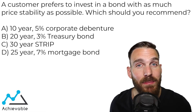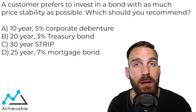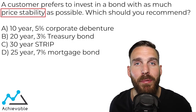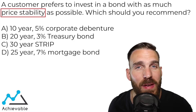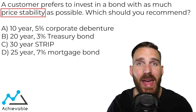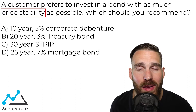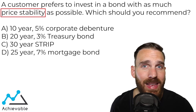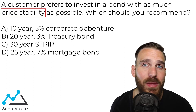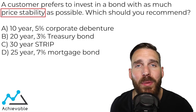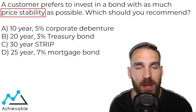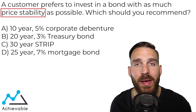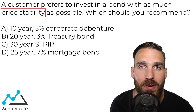This one's not exactly easy, but let's see how confident you are in your answer. We have a customer that's looking for as much stability in price as possible — meaning we don't want to see big swings in market value. If a bond is worth $1,000 today, we want it to still be close to $1,000 tomorrow, no matter what happens in the market. We need to pick the bond from four options that exhibits that characteristic.